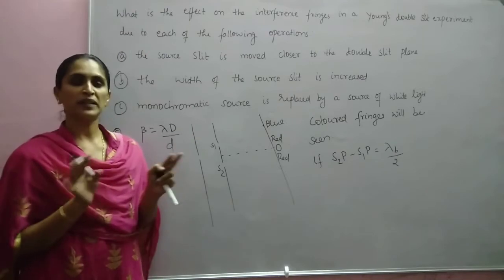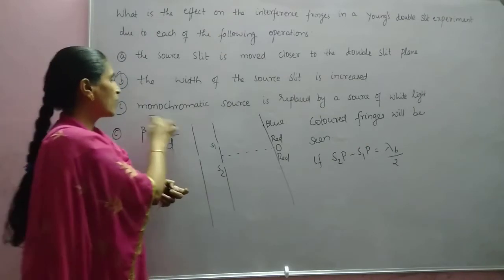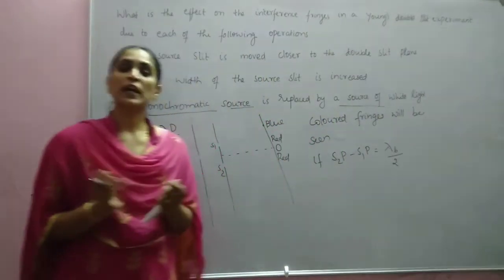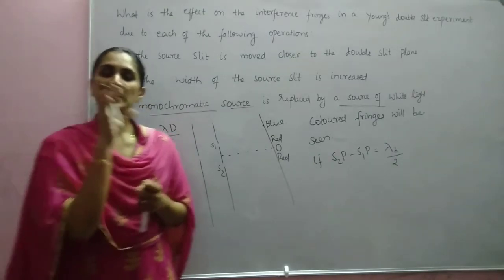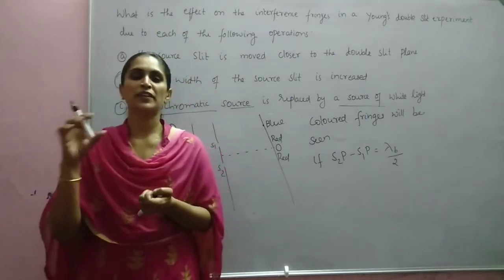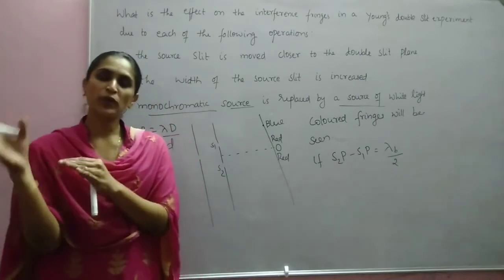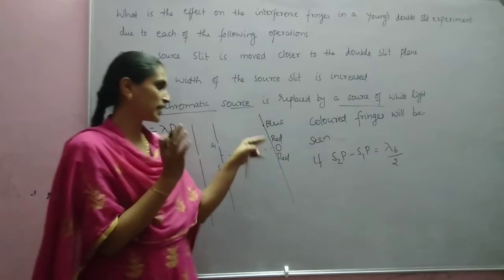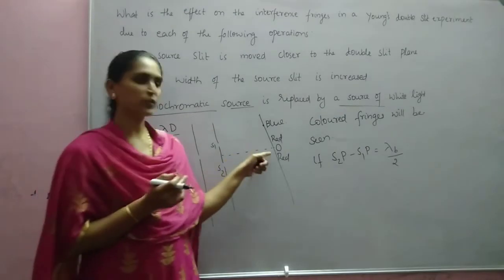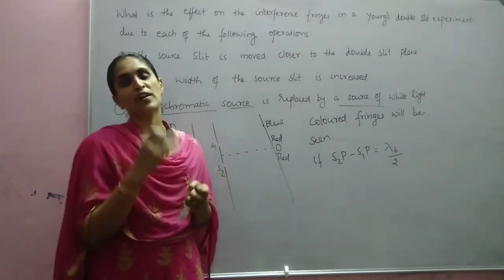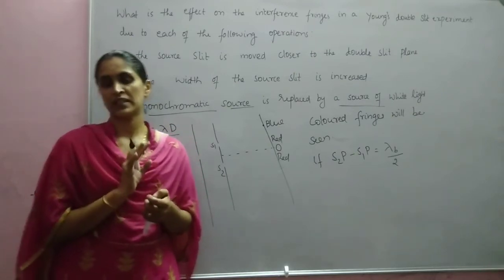As we proceed to larger distances, this colored fringe pattern will disappear — only to a smaller distance can we see colored fringes. We conclude that when a monochromatic source is replaced by white light, colored fringes will appear instead of alternate bright and dark fringes, because the path difference for maximum intensity is different for different colors, coinciding only at the central point.